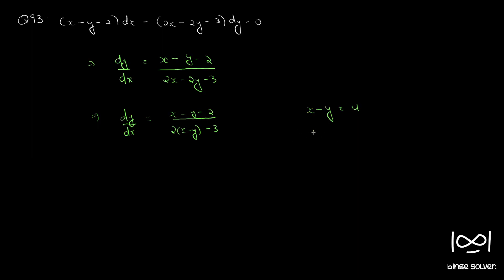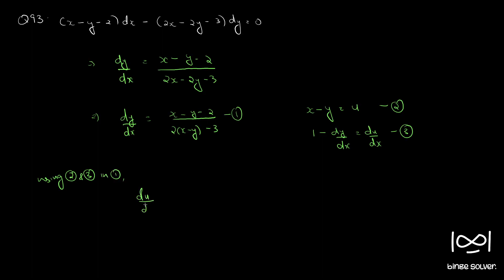So, from x minus y equal to u, differentiating gives 1 minus dy by dx equal to du by dx. Let this be equation 1, equation 2, equation 3. From equation 3, we can see dy by dx is 1 minus du by dx. So, substituting, 1 minus du by dx is equal to u minus 2 by 2u minus 3.